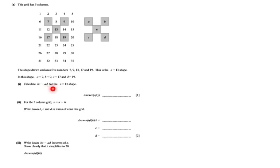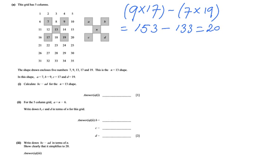Now let's look at the question. They say calculate BC minus AD for the n equals 13 shape. BC means B times C, so 9 times 17. Let's put brackets around that, minus AD, so A times D, 7 times 19. You can put it in your calculator: 9 times 17 is 153, take away 7 times 19, which is 133, and that equals 20. I'm going to put 20 there because that's my answer.